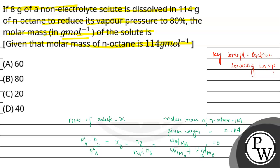So the molecular weight of the solute is 40 gram per mole. From the given options, option D is the correct answer. Thank you, I hope you understood it well.